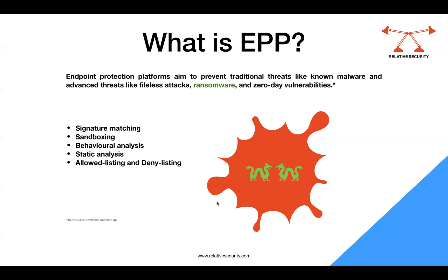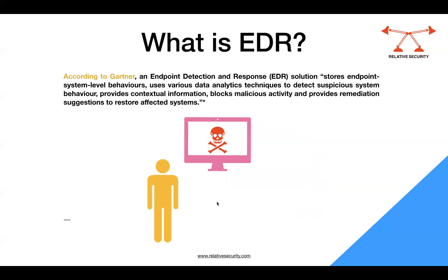To summarize: the EPP agent attaches itself to the process, checks the techniques, and maps them against a known database of core attack techniques. If it finds a match between what the process is doing and a technique in its database, it stops the execution of that binary. In the antivirus it was mainly around signatures and file structure, but for the endpoint protection platform we also see it looking at core attack techniques associated with cyber attacks.